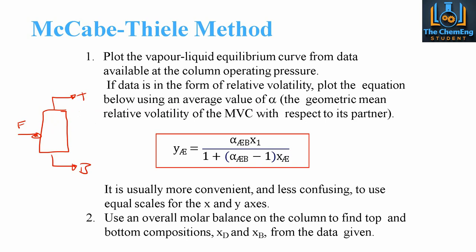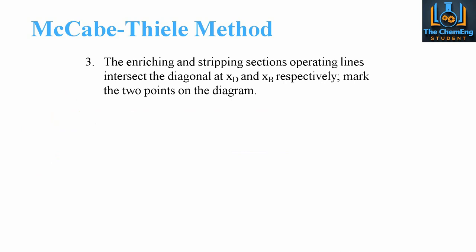Step three: the enriching and stripping section operating lines will intersect the diagonal — the 45-degree line — at the respective compositions xd and xb. Enriching is the top section and stripping is the bottom, and we mark these two points on the diagram.